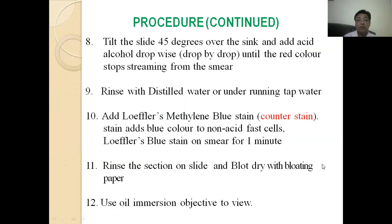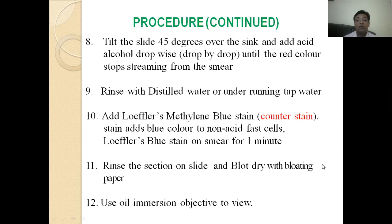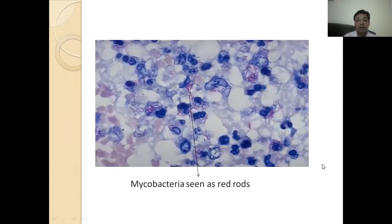Tilt the slide 45 degrees over the sink and add acid alcohol drop by drop until the red color stops streaming from the smear. Rinse with distilled water or under running tap water. Add methylene blue stain, which acts as a counterstain and adds blue color to non-acid-fast cells — use it for one minute. Rinse the section of the slide and blot dry with blotting paper. In the last step, use an oil immersion objective to view the smear. Mycobacteria are seen as red rod-shaped structures.